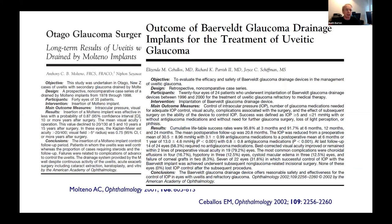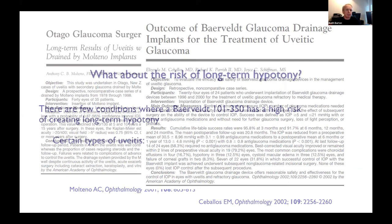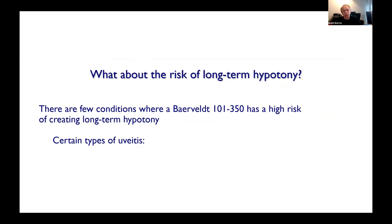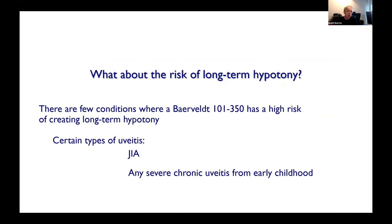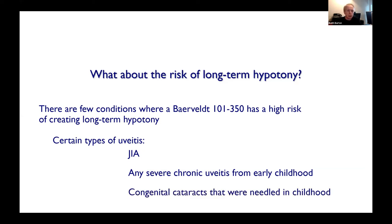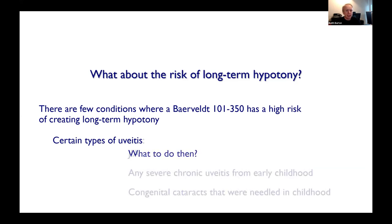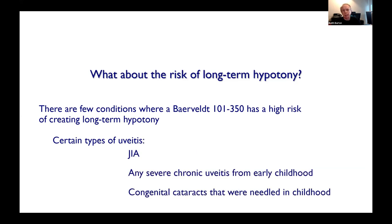My go-to tube is the 350 Baerveldt — it gives good long-term results. But there are some cases where it can bite you badly: these are the ones with JIA or any uveitis from very early childhood, or congenital cataracts that were needled at an early age — they behave like severe chronic uveitis as well.